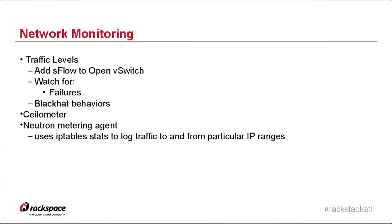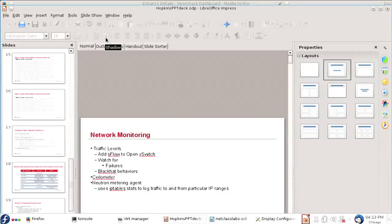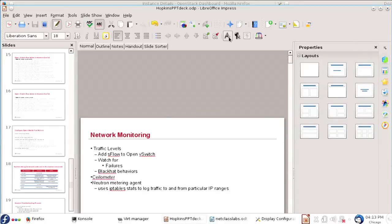One more thing before we look at the example: traffic levels. Open vSwitch supports S-Flow, and network nodes can get trapped into too much traffic. Setting traffic data to an S-Flow collector is real helpful. So let's shrink this down and look at a real VM here.